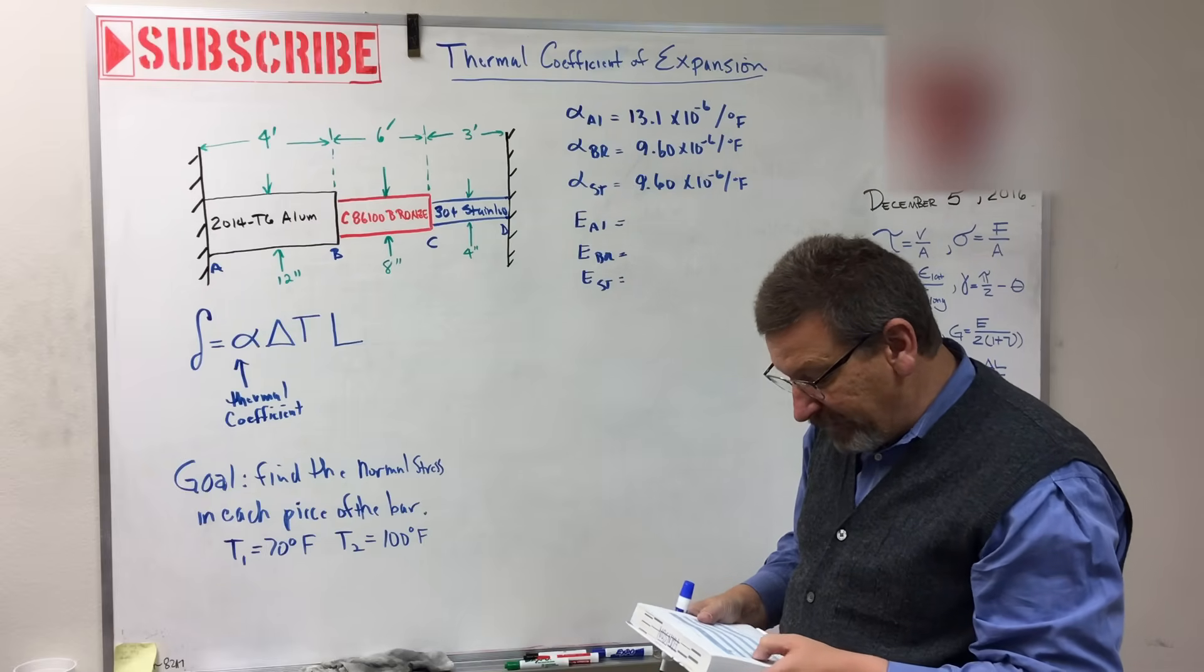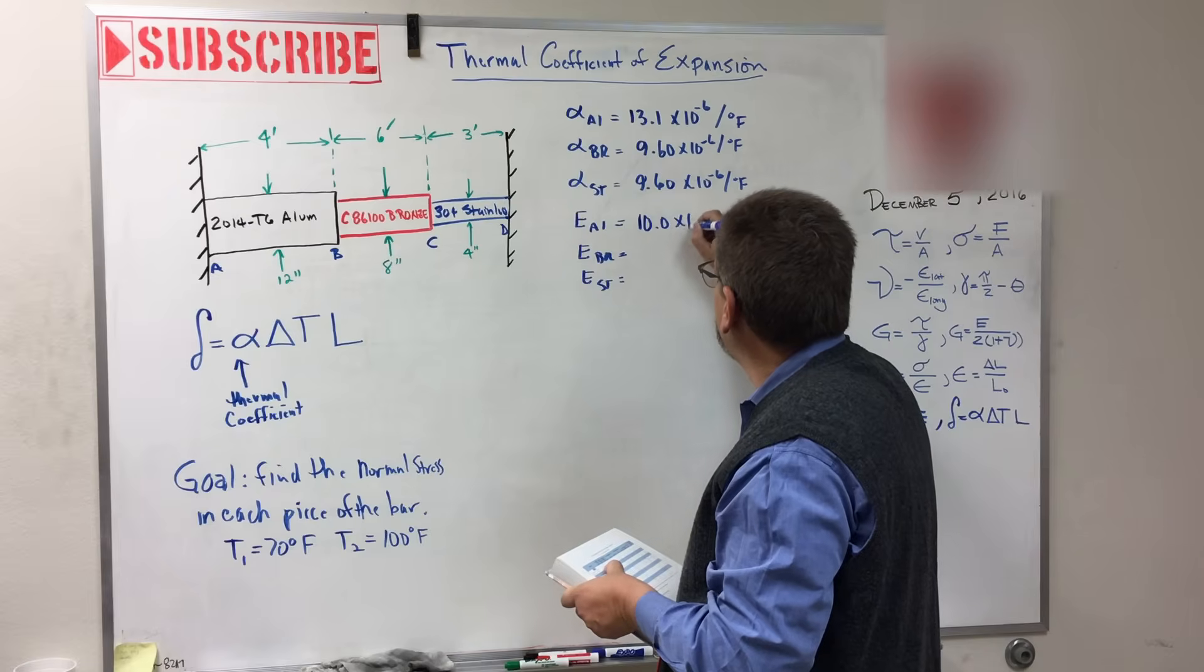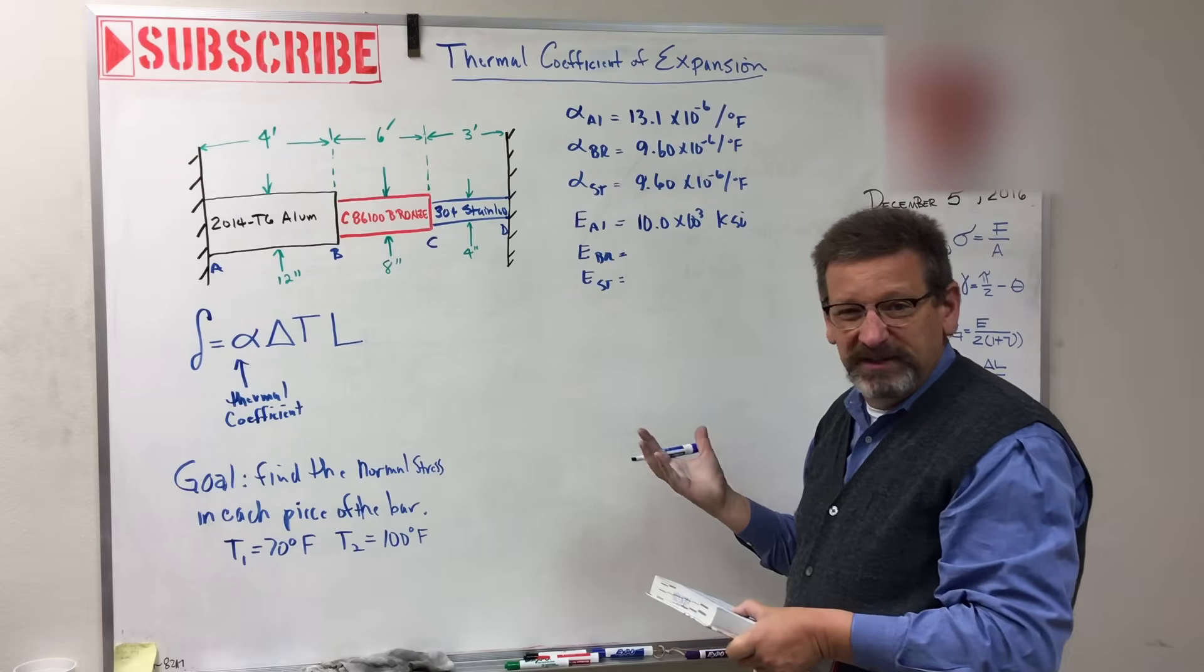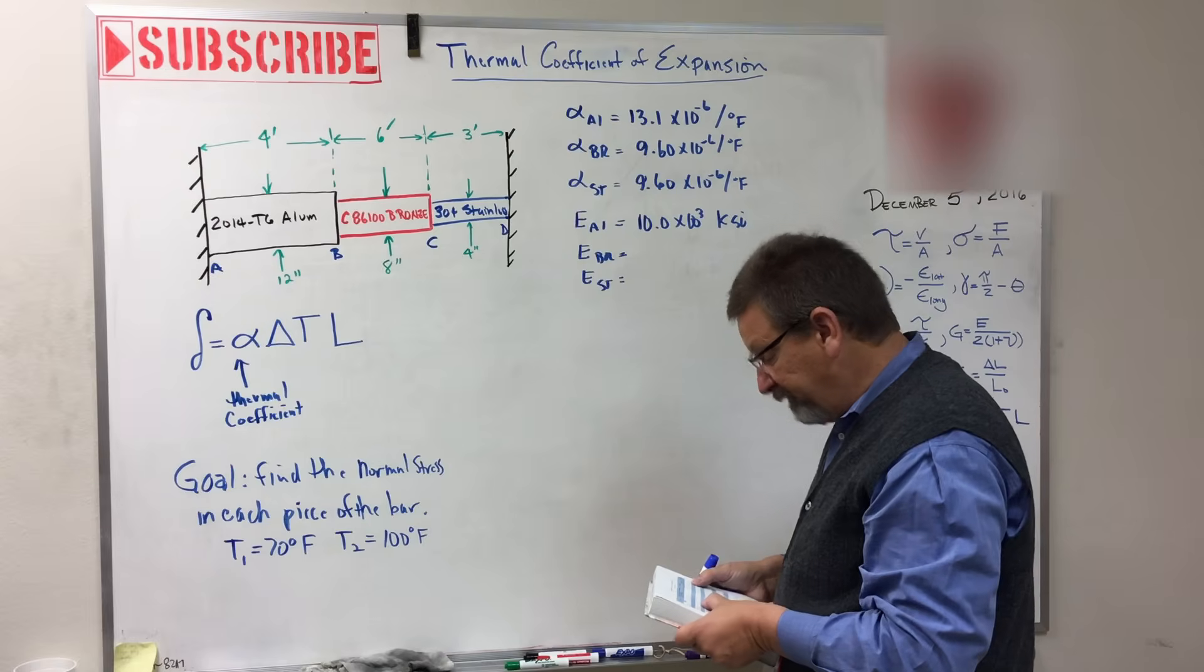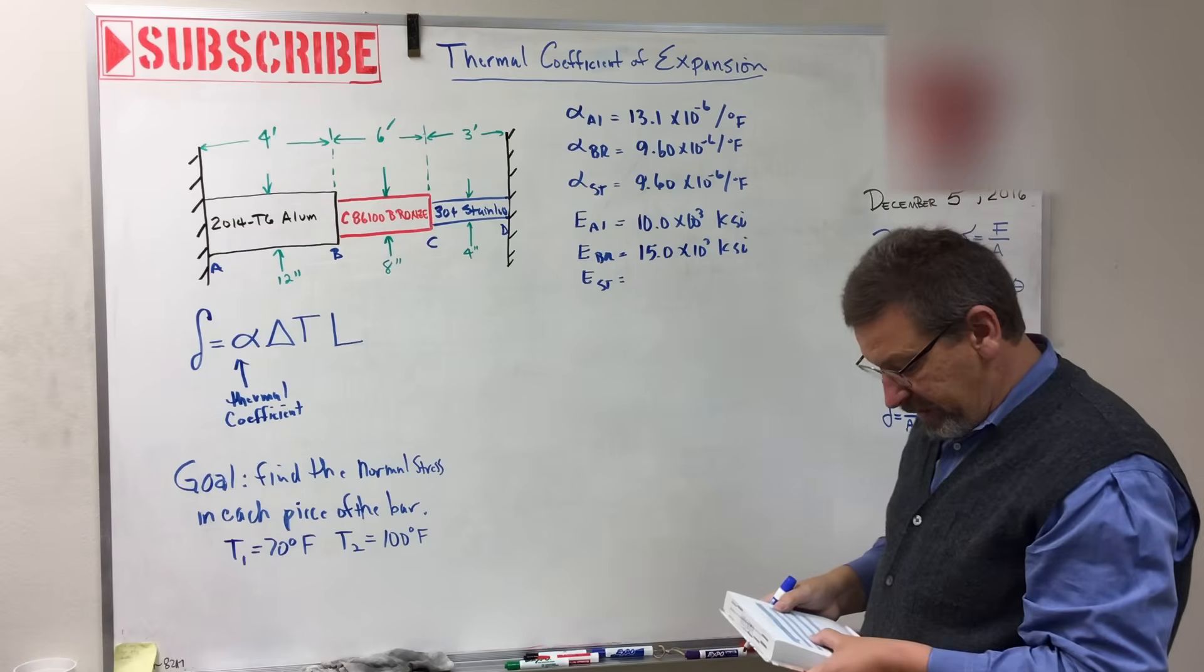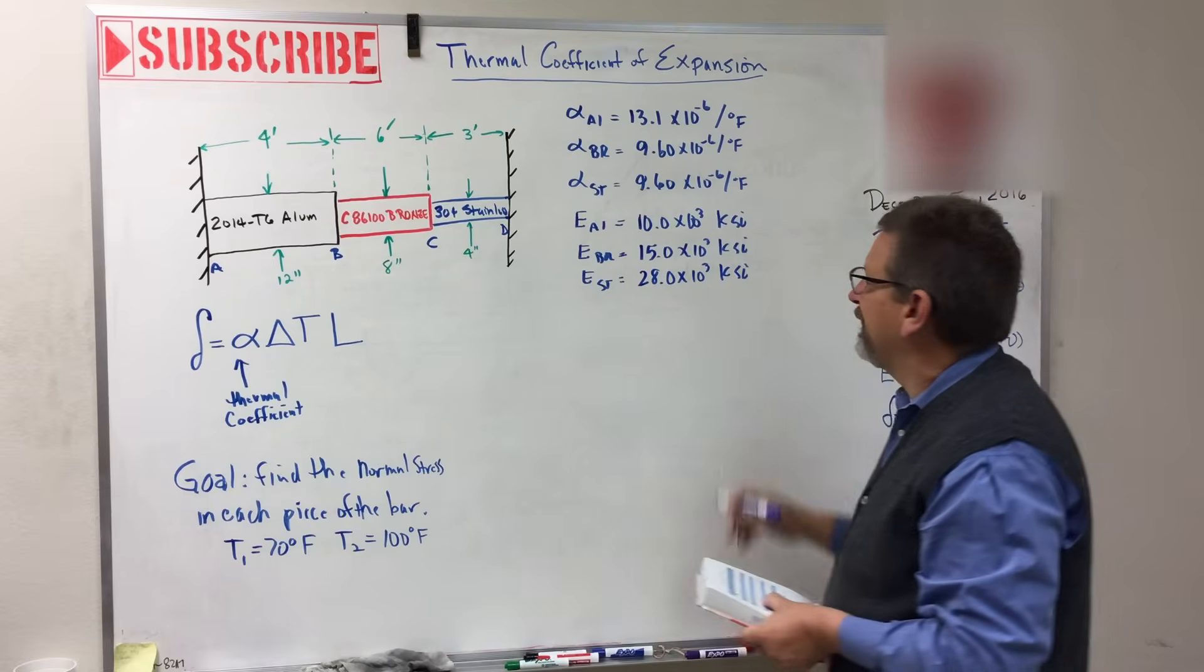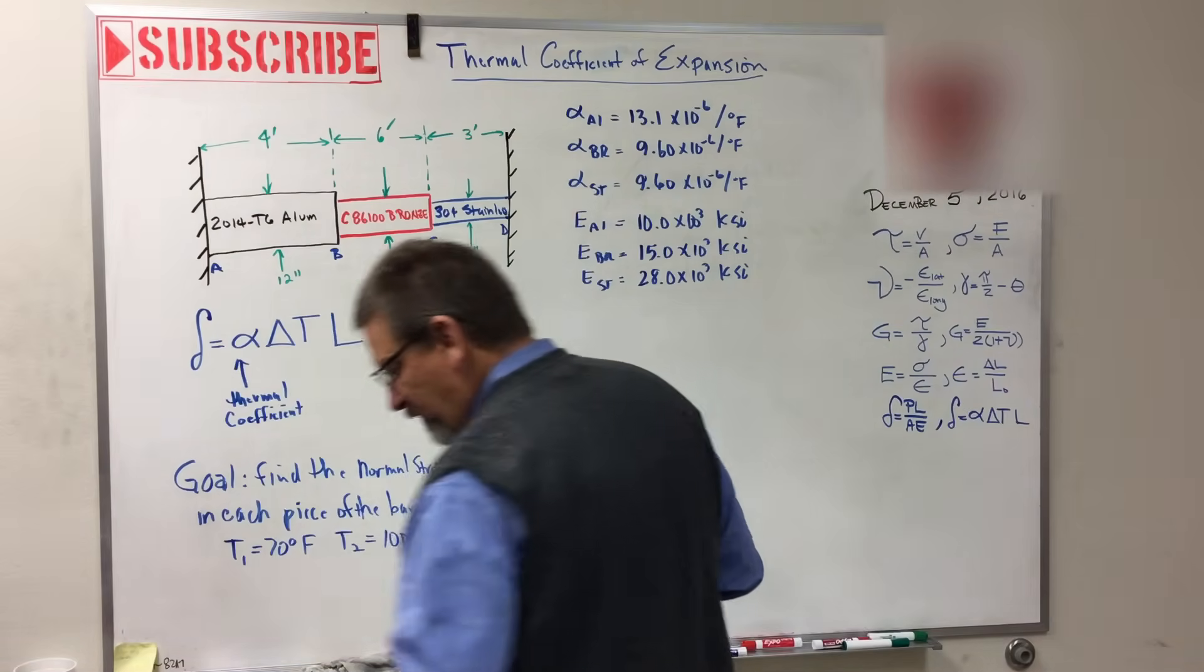And then E for aluminum. Now that's the modulus of elasticity, and that is 10.0 times 10 to the third KSI. We may put that in PSI. Otherwise, our thing will come out in kips, but that's probably okay. We can use kips. Bronze is 15.0 times 10 to the third KSI. And then one more, stainless steel, 28.0 times 10 to the third KSI. So there's our look them up values.